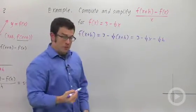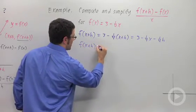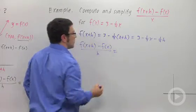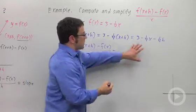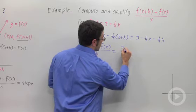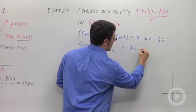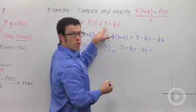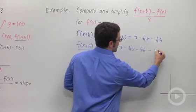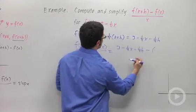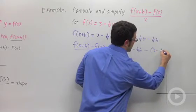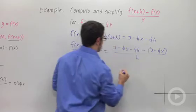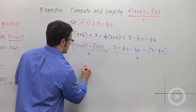So my difference quotient, f of x plus h minus f of x over h, will be f of x plus h, this quantity: 3 minus 1 quarter x minus 1 quarter h minus this quantity, f of x. And I'll use parentheses because I'm going to have to distribute this negative sign: 3 minus 1 quarter x all over h.